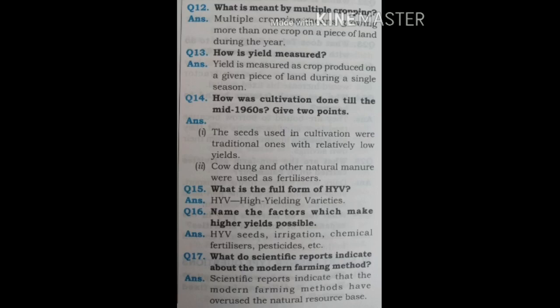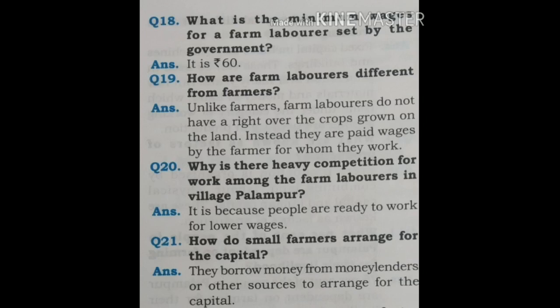Question 16: Name the factors which make higher yields possible. HYV seeds, irrigation, chemical fertilizers, pesticides, etc. Question 17: What do scientific reports indicate about the modern farming method? The modern farming methods have overused the natural resource base. Question 18: What is the minimum wage for a farm laborer set by the government? It is Rs. 60.